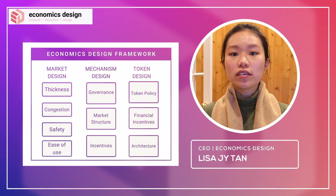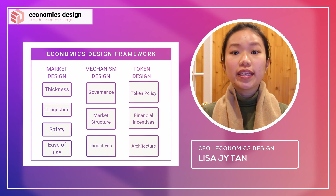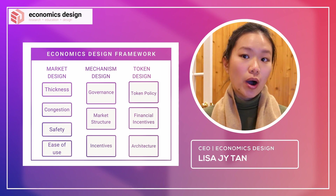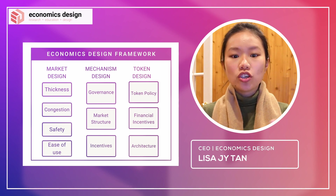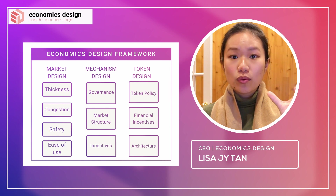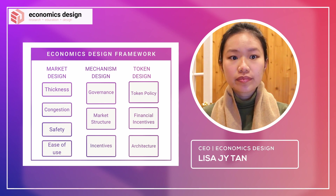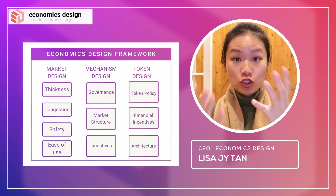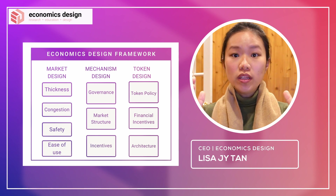These are the three different pillars when you design your token ecosystem. In market design, you're looking at how we define and create the market. Mechanism design covers the rules in the market — when people come to trade, everyone must abide by the same rules. And lastly, we have token design, which specifically covers the native token of this ecosystem — the JOE token, which is the main core token.